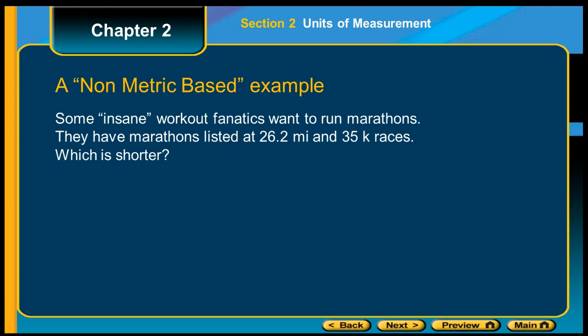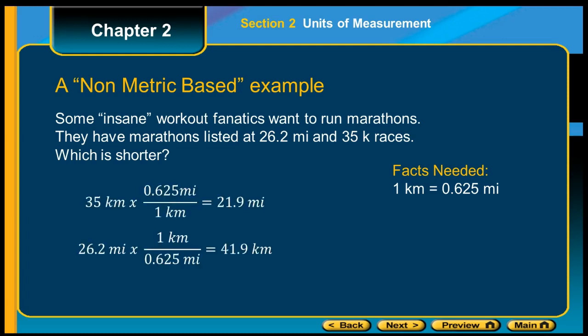We're going to pick one of those numbers and turn it into the other unit. We need to know the number of kilometers equaling the number of miles. So one kilometer equals 0.625 miles. I'm going to pick one of them. For instance, 35 kilometers times a fraction. I need to have my km on the bottom and my mile on the top, and I would take 35 times 0.625 to get 21.9 miles. Or if I pick the 26.2 miles and divided by the miles times kilometers, I get 41.9 km.